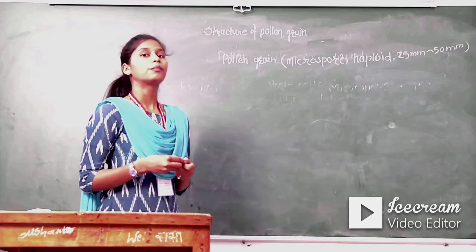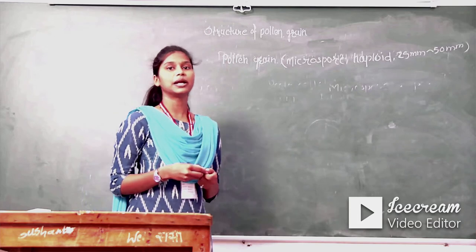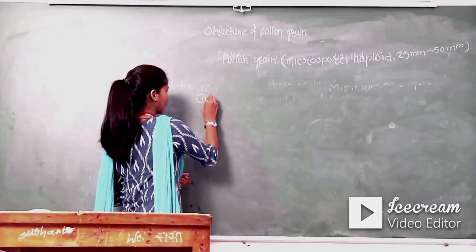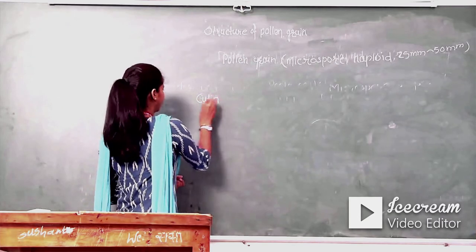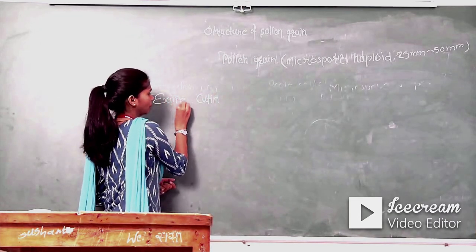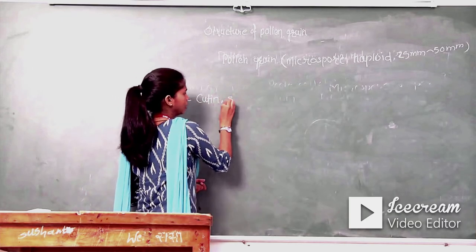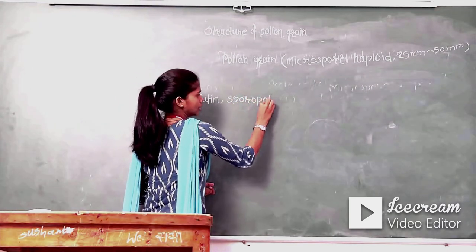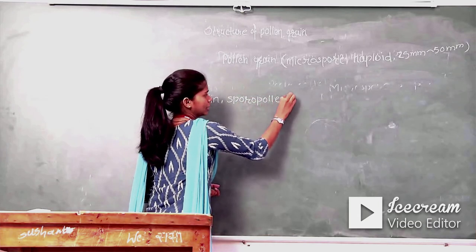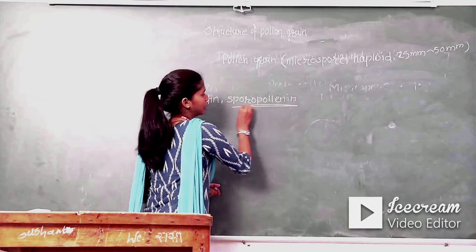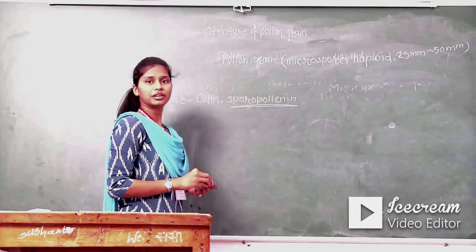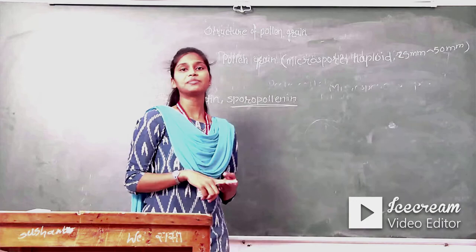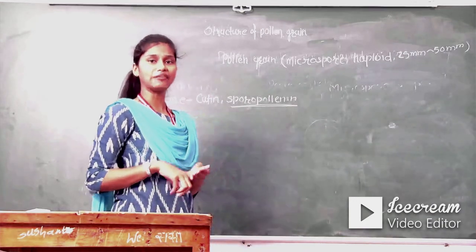The outer layer of pollen grain, that is exine, is made up of cutene and sporopollenin. This sporopollenin is a very resistant material in the biological world and it cannot be degraded by biomolecules like enzymes, viruses, bacteria, and fungi.